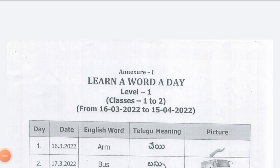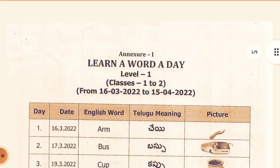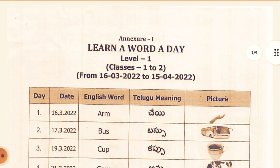This is the Learn A Word A Day program. Programs are made in level 1, level 2, level 3, and level 4 words. For level 1, 1st and 2nd classes. These are the words from 16th March to 15th April.